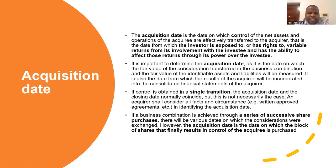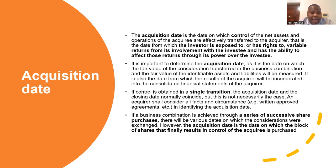If a business combination is achieved through a series of successive share purchases, there will be various dates on which considerations were exchanged, and sometimes the money might be paid in bits and pieces. In such a case, the acquisition date is the date on which the block of shares that finally results in control of the acquiree is purchased. For example, if today the acquirer purchases 20% of the shares and the next day purchases 15%, the date on which the acquirer achieves control is considered the date of acquisition.